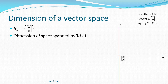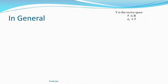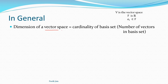Now talking about dimension: what is the dimension of a vector space? The dimension of the space spanned by B1 — suppose B1 is just one vector (1,0) in R² — you can see that this vector is only on the x-axis. I can only span numbers on the x-axis, I cannot go up, so this is one-dimensional.